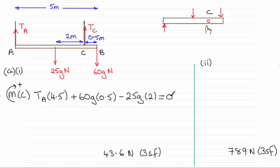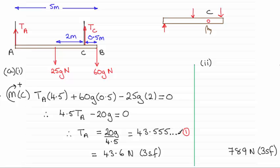And it's just a question now of rearranging this and solving it for that tension in A. Well, if you do that, then these are the following steps: that TA turns out to be 43.55 and so on. And I've numbered that equation, as you can see, as 1.